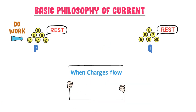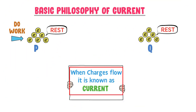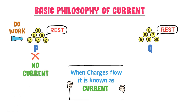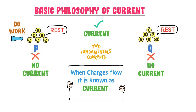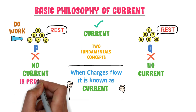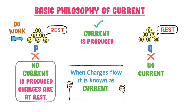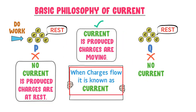When charges flow or move, it is known as a current. We know that charges are at rest at point P, so there is no current. Charges are also at rest at point Q, so there is also no current. But when charges flow or move from point P to point Q, there is current. So remember: no current is produced when charges are at rest, and current is only produced if charges flow.